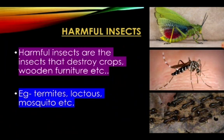Harmful insects. Harmful insects are the insects that destroy crops and wooden furniture. Examples are termites, mosquitoes, locusts, etc.